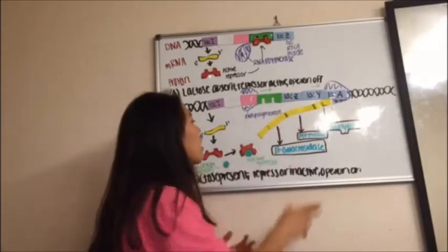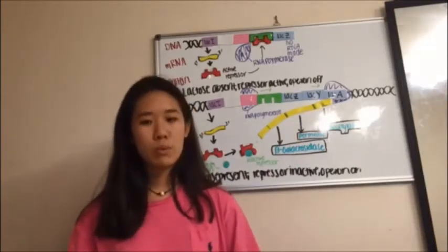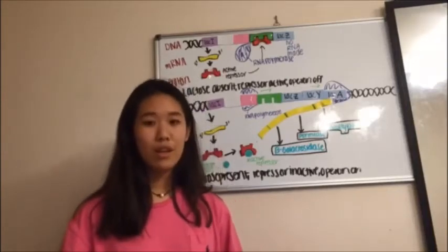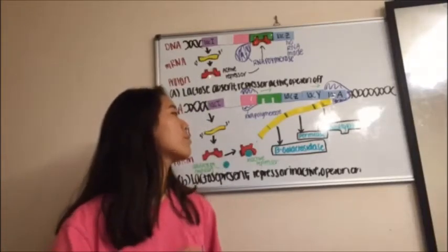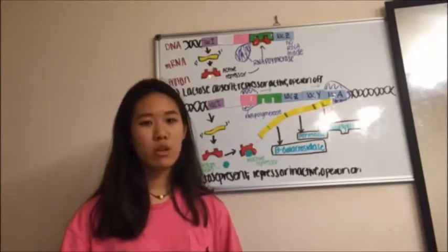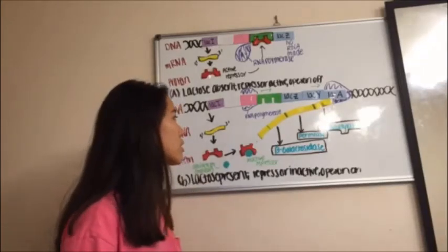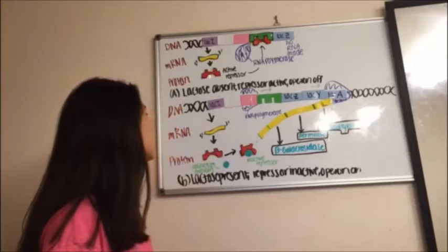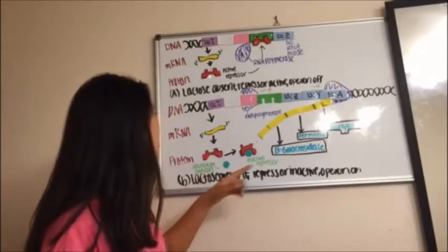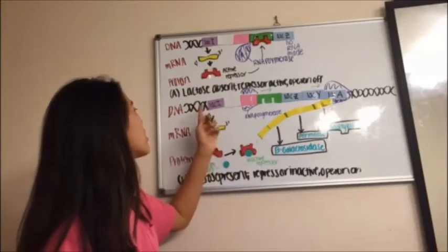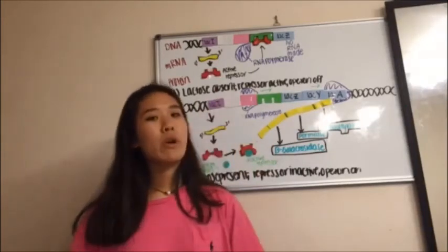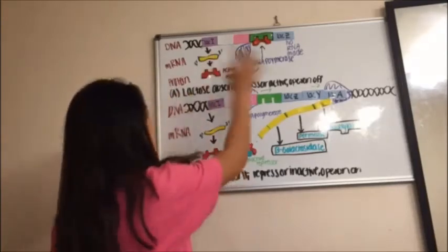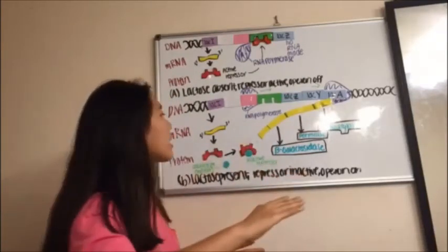LacZ codes for beta-galactosidase, which is responsible for converting lactose into glucose. LacY codes for permease, which is a surface protein that allows lactose into the cell. LacA codes for transacetylase, whose purpose we do not know for now. Going back to lacI, which is in a different position from the others, it codes for the repressor protein. The central dogma of this is that it goes from DNA to mRNA to protein.